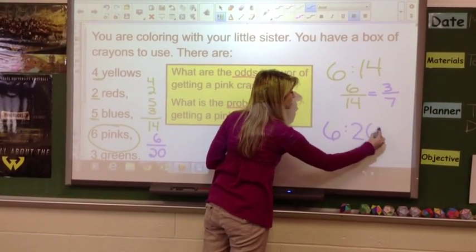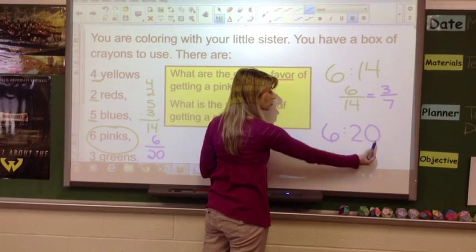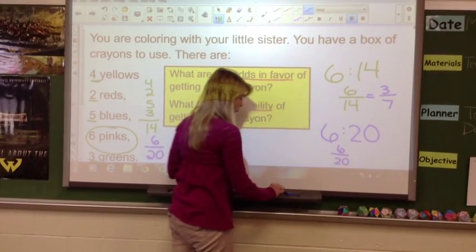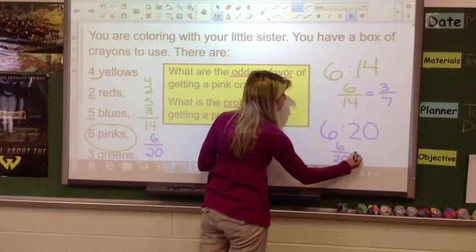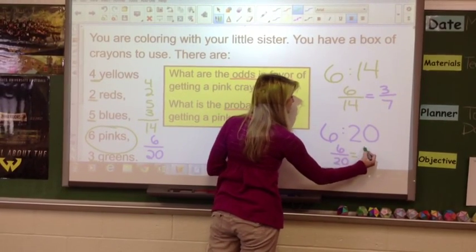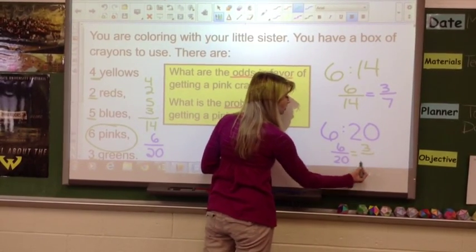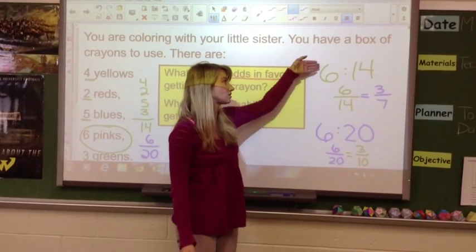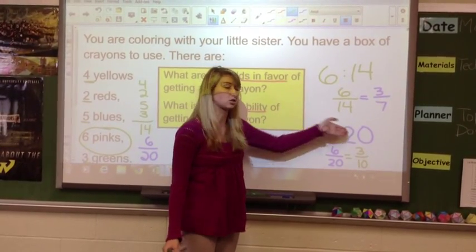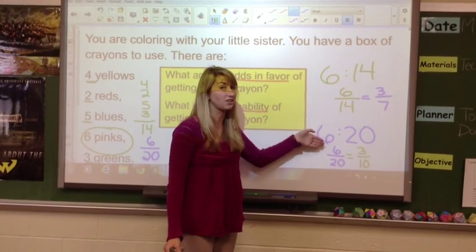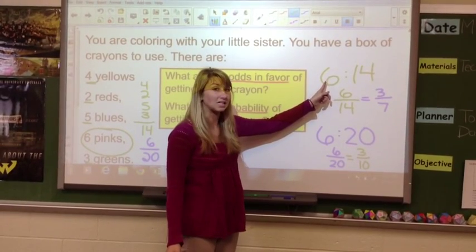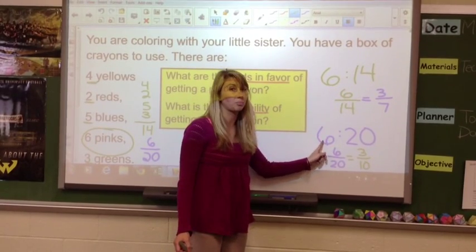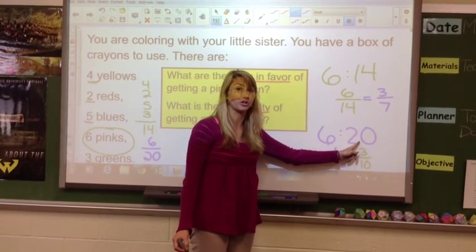So I write this as six to twenty. I can also write it as a fraction: six over twenty. Then I can reduce because they're both even — half of six is three, half of twenty is ten. So you notice six to fourteen versus six to twenty — they look a little bit different because it's the odds of getting a pink versus what's left over, or the odds of getting a pink versus your total chances.